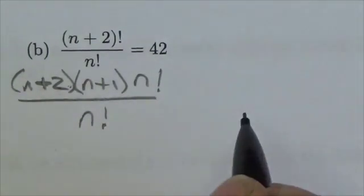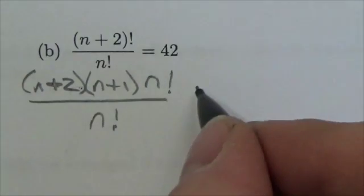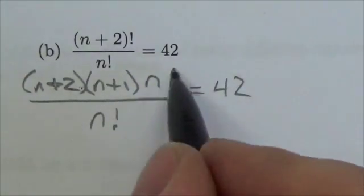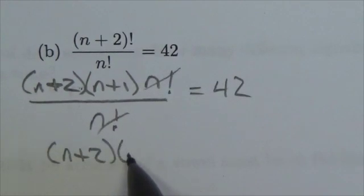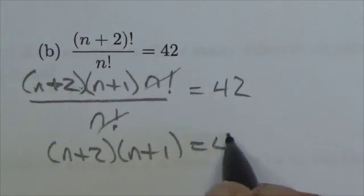And we introduce those factorials to indicate that we continue on until we get to 1. This is going to equal 42. So those are going to cancel here and we're left with n plus 2 times n plus 1 is equal to 42.